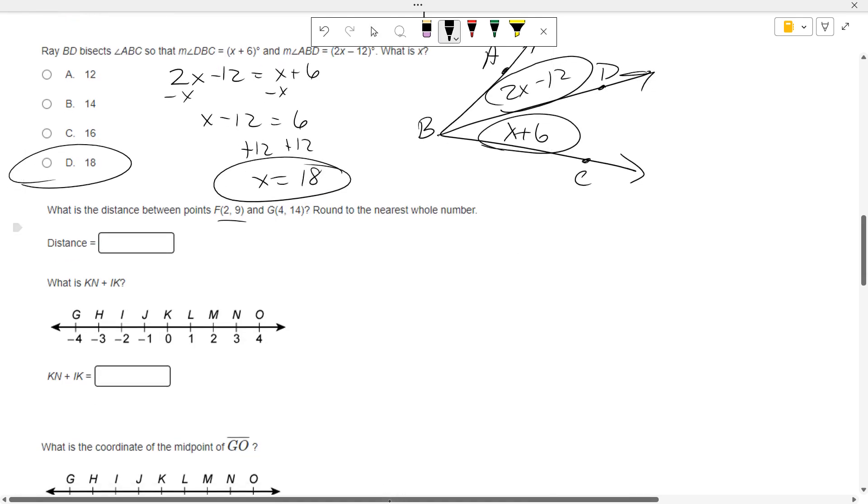What's the distance between these two points? Well, we use the distance formula. So we make this one X1, Y1. This one X2, Y2. So the distance equals the square root of 4 minus 2 squared plus 14 minus 9 squared.